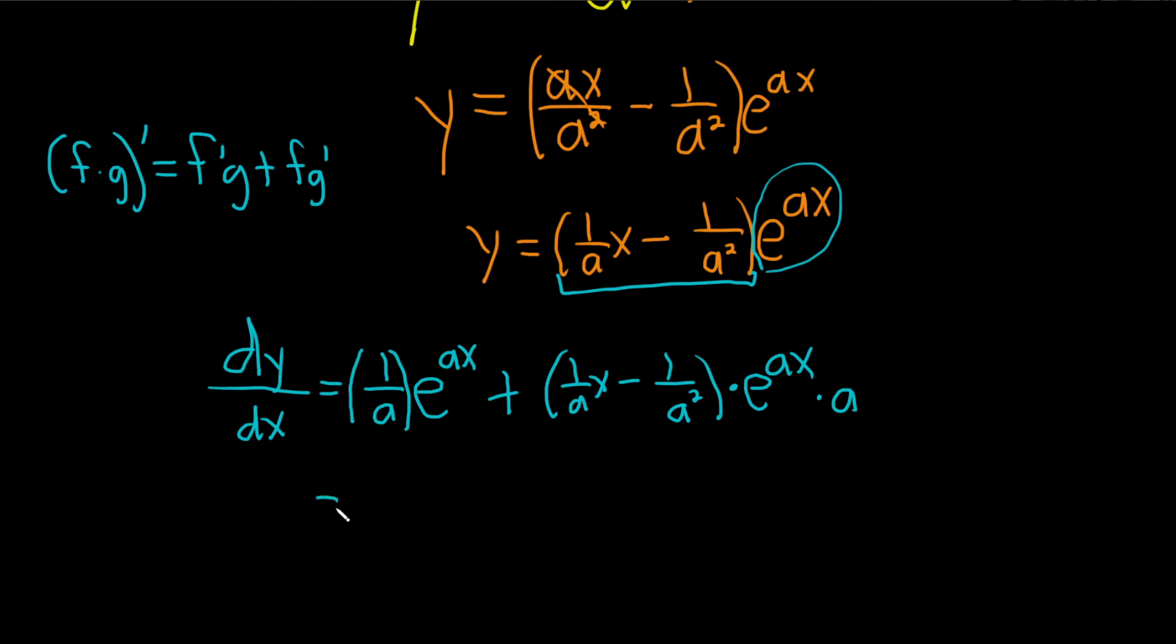So what do we have here? This is 1 over a e to the a x. Let's clean this up. Let's see what happens. We're going to take this and distribute it through. So the a's will cancel. So we'll just get plus x e to the a x.